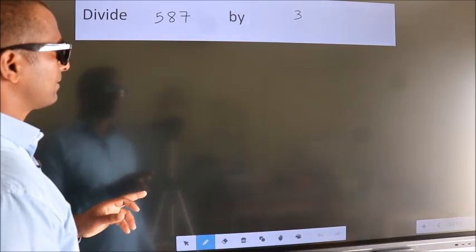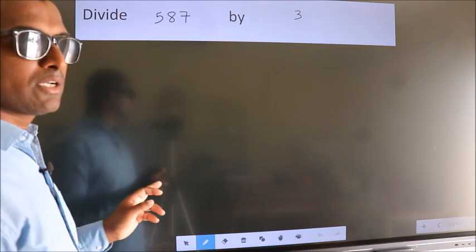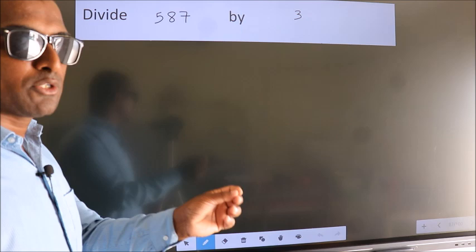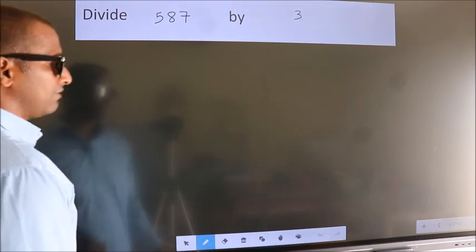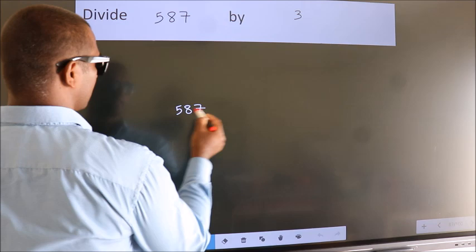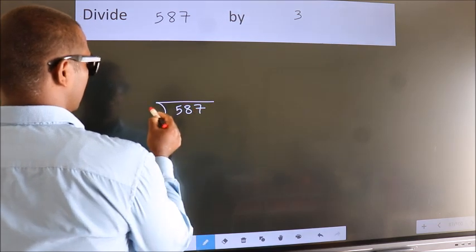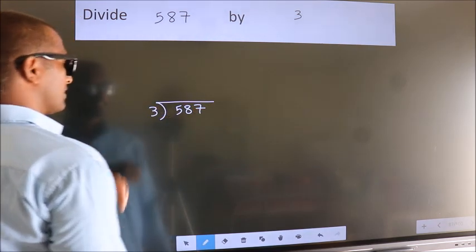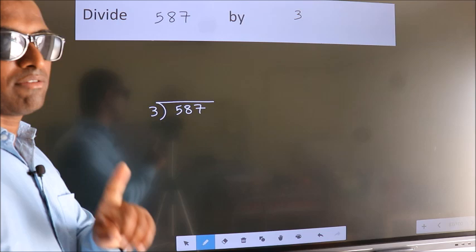Divide 587 by 3. To do this division, we should frame it in this way. 587 here, 3 here. This is your step 1.